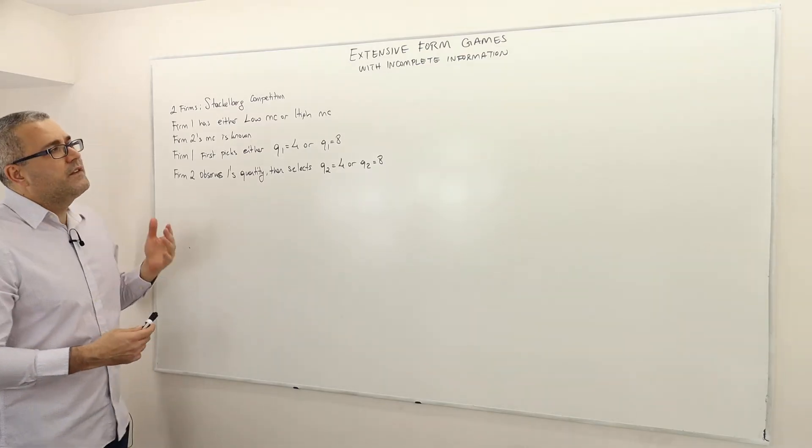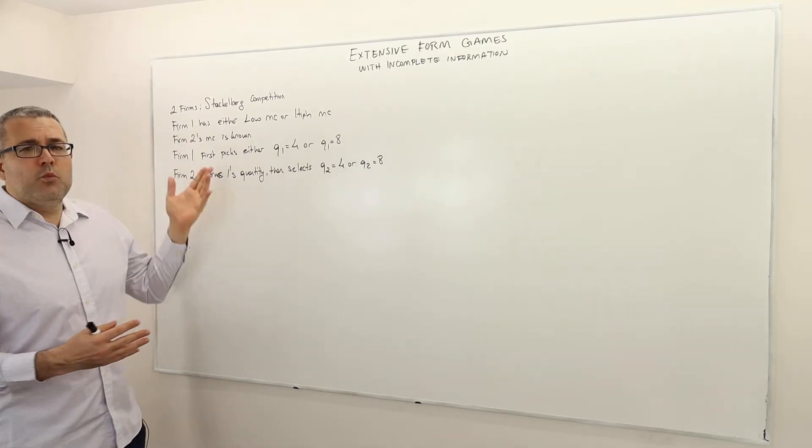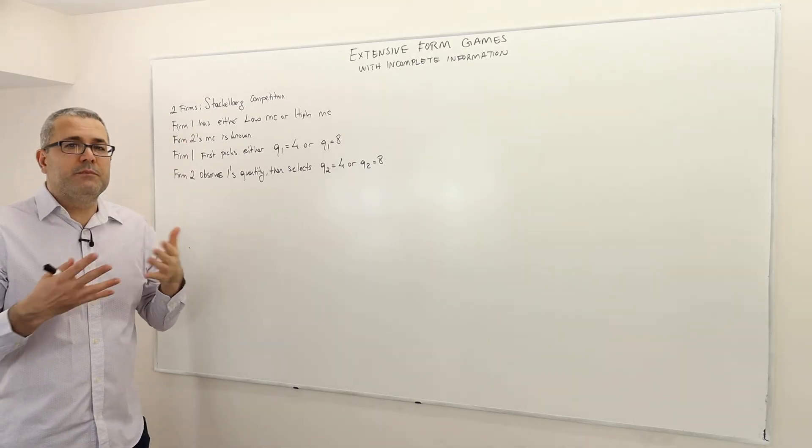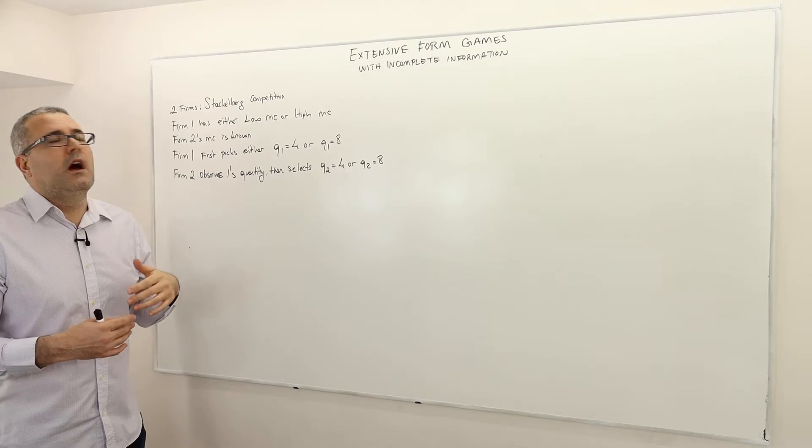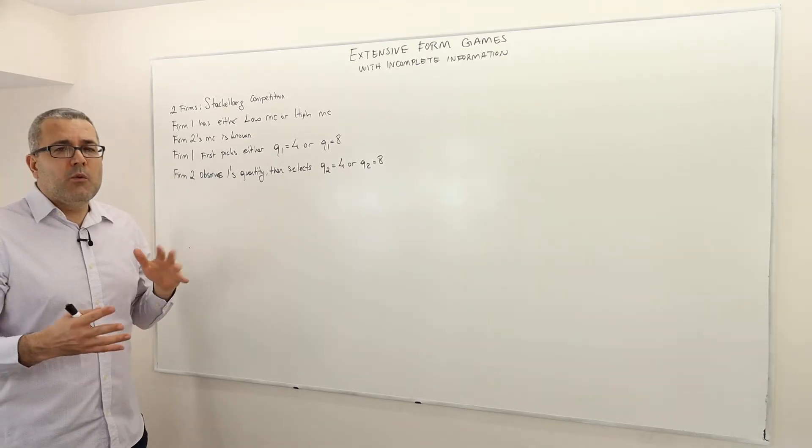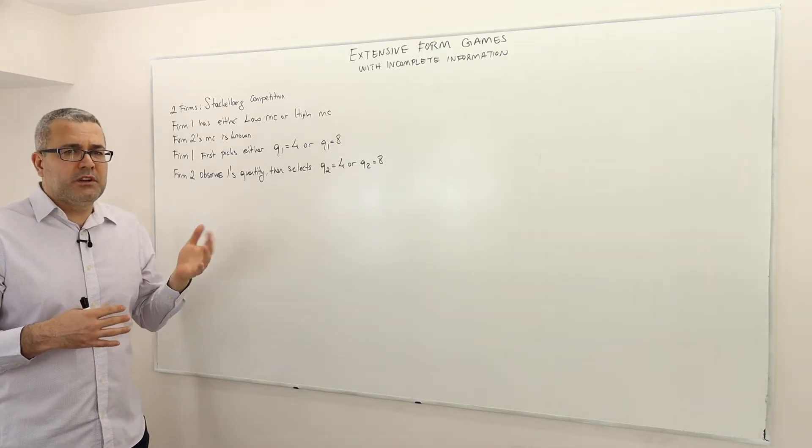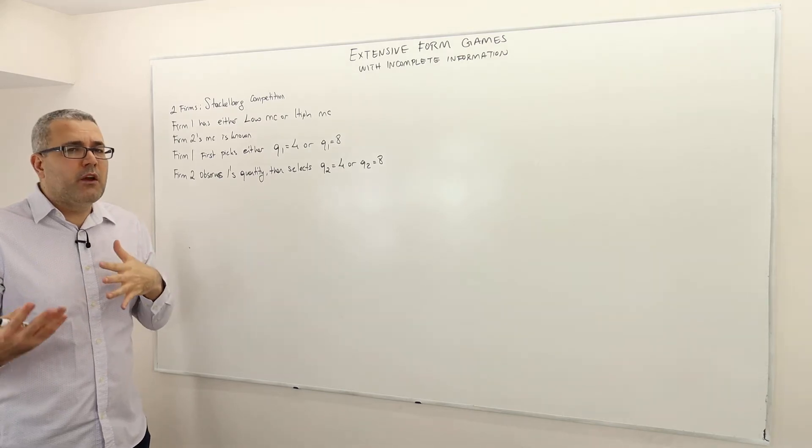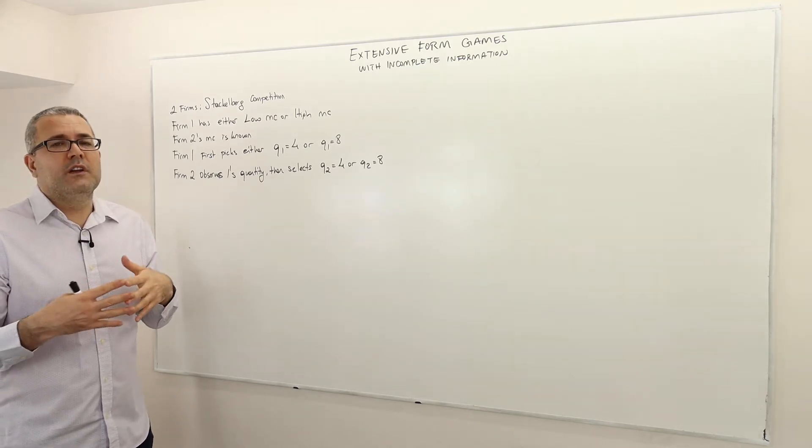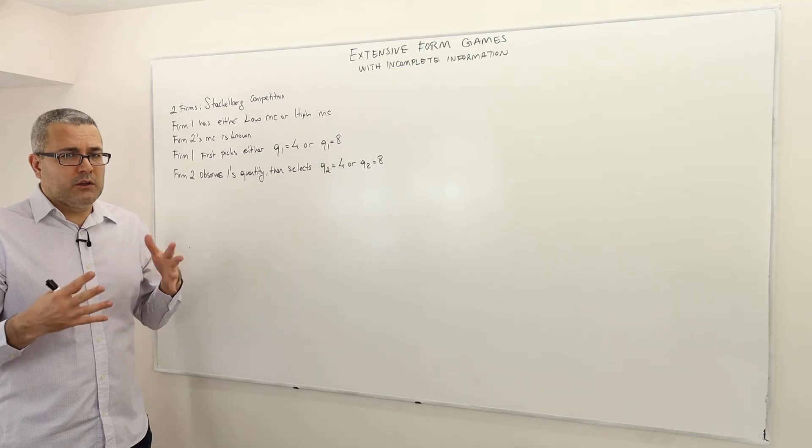However firm 2's marginal cost is public information, it's commonly known. So there's incomplete information from firm 1's marginal cost therefore its payoff function is unknown to player 2, however this is one-sided asymmetric information because firm 2's payoff function and marginal cost is perfectly known by all players.